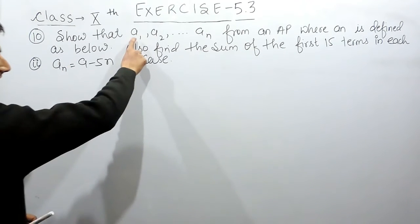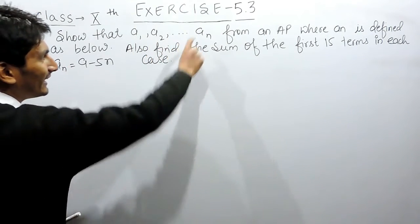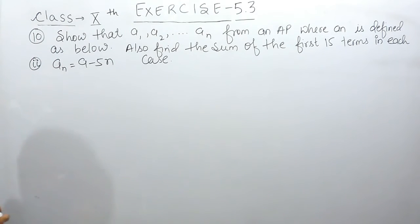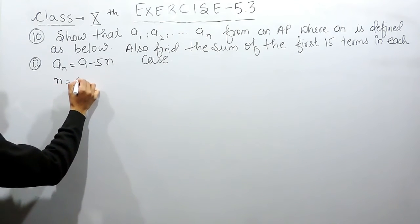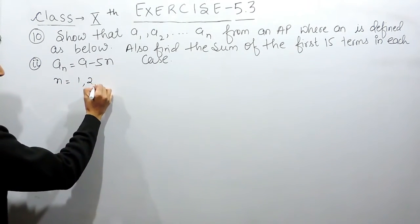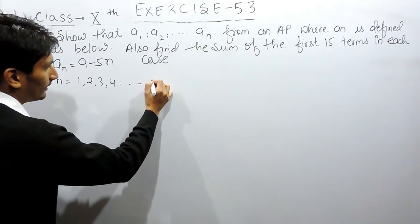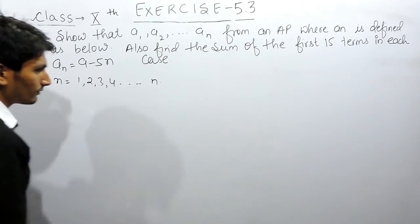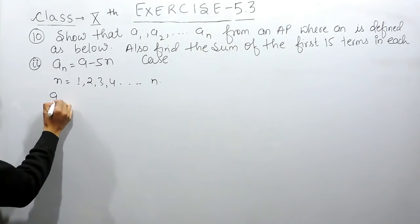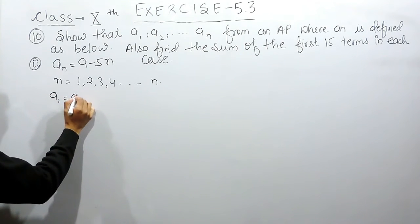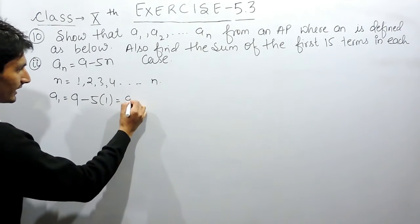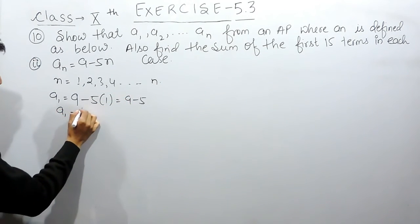So in this case a1, a2, a3, and till an are the terms of the AP, and each term is given where n is basically the number of terms, considered as 1, 2, 3, 4, and till n. Now if I consider n as 1, the first term a1 = 9 minus 5 into 1, which is 9 minus 5, so the first term equals 4.